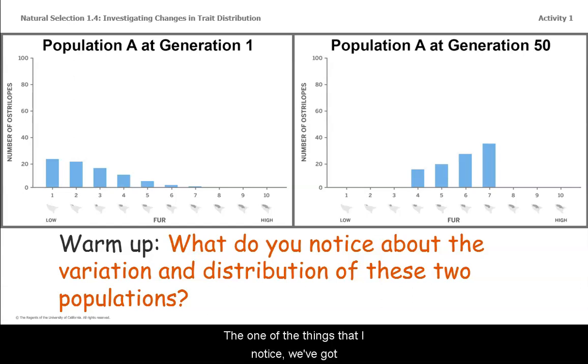So one of the things that I noticed: we've got population A at generation one and population A at generation 50. This tells me that time has gone by. Then I look at the trait that we're focusing on, and the trait is the amount of fur of the australopes.